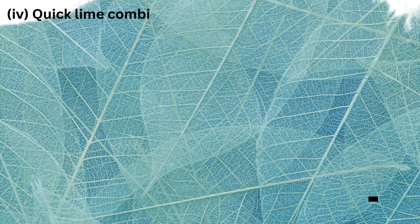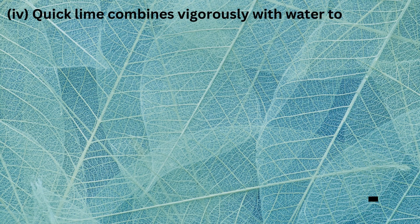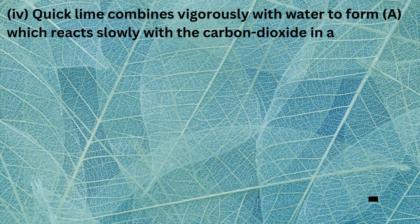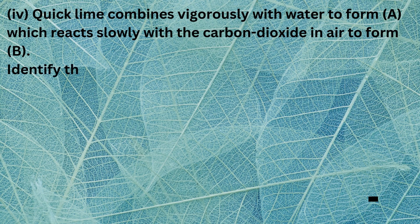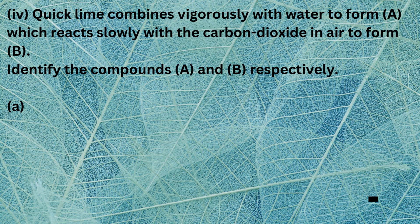Question 4: Quick lime combines vigorously with water to form A, which reacts slowly with the carbon dioxide in air to form B. Identify the compounds A and B, respectively.